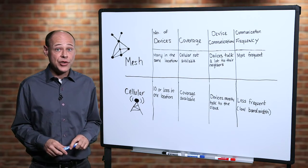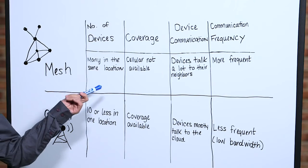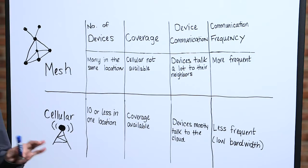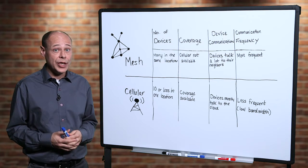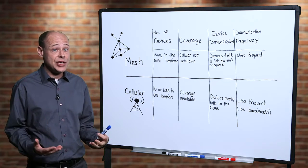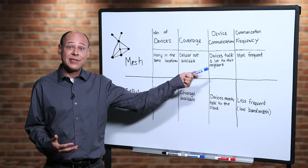Mesh networking is a good solution when you have many devices in the same location or anytime cellular coverage is not available. It's good for networks where devices talk a lot to their local neighbors and when communication between these devices is frequent.